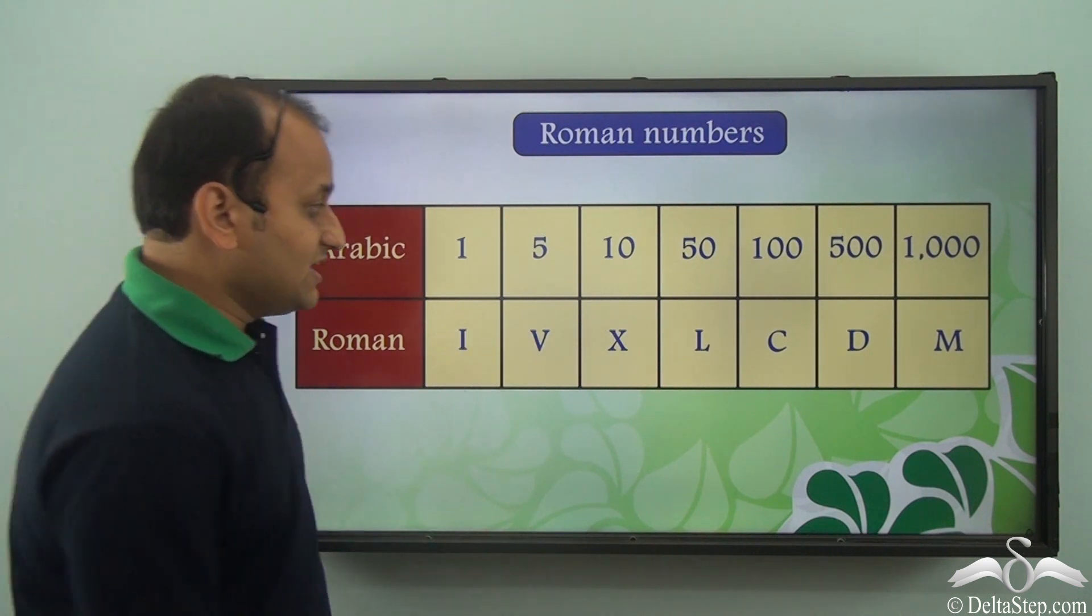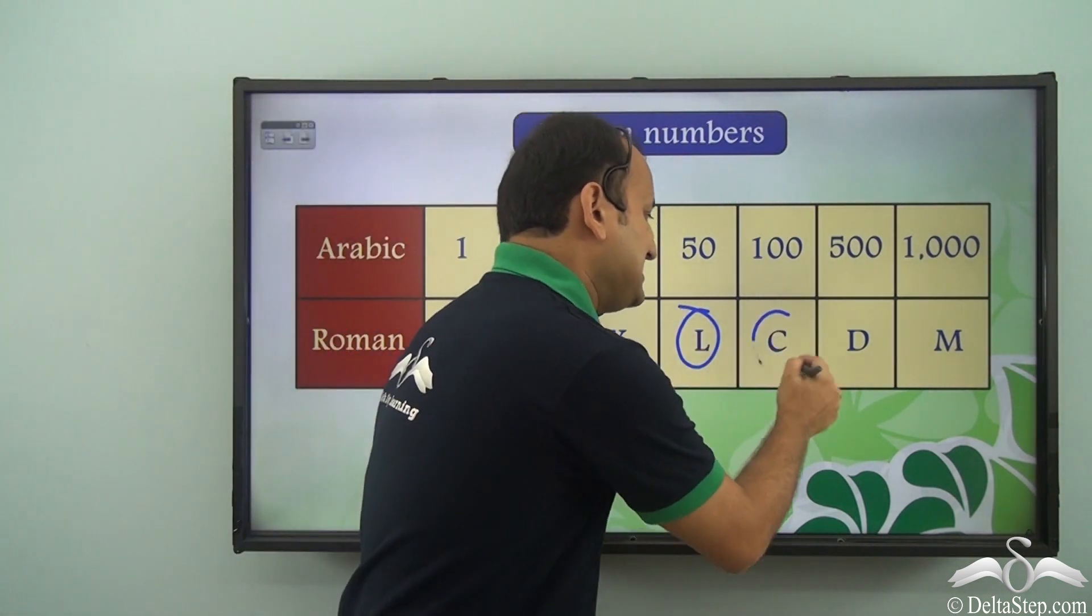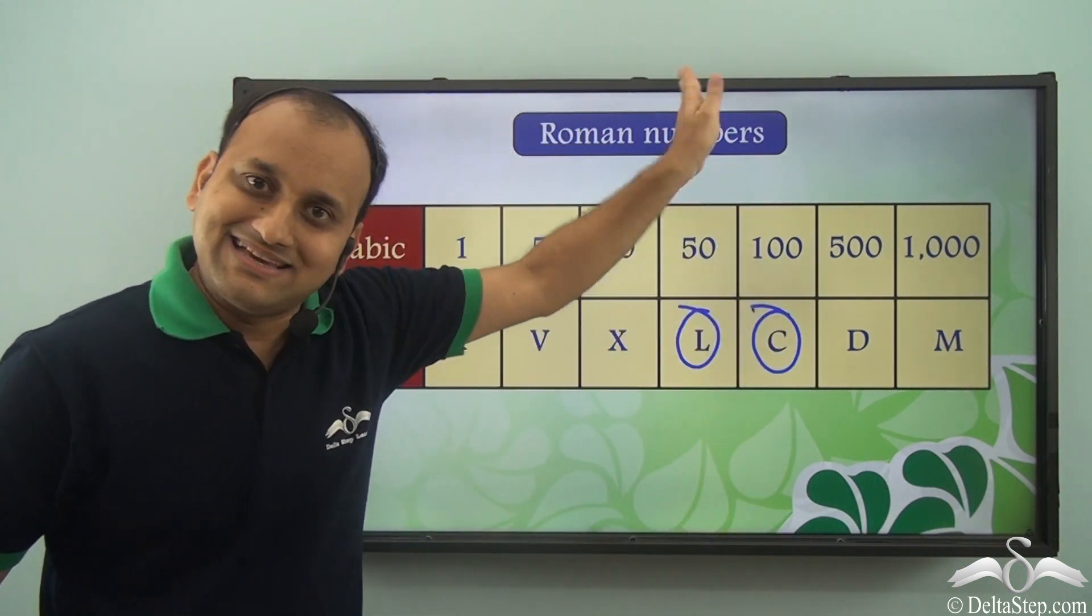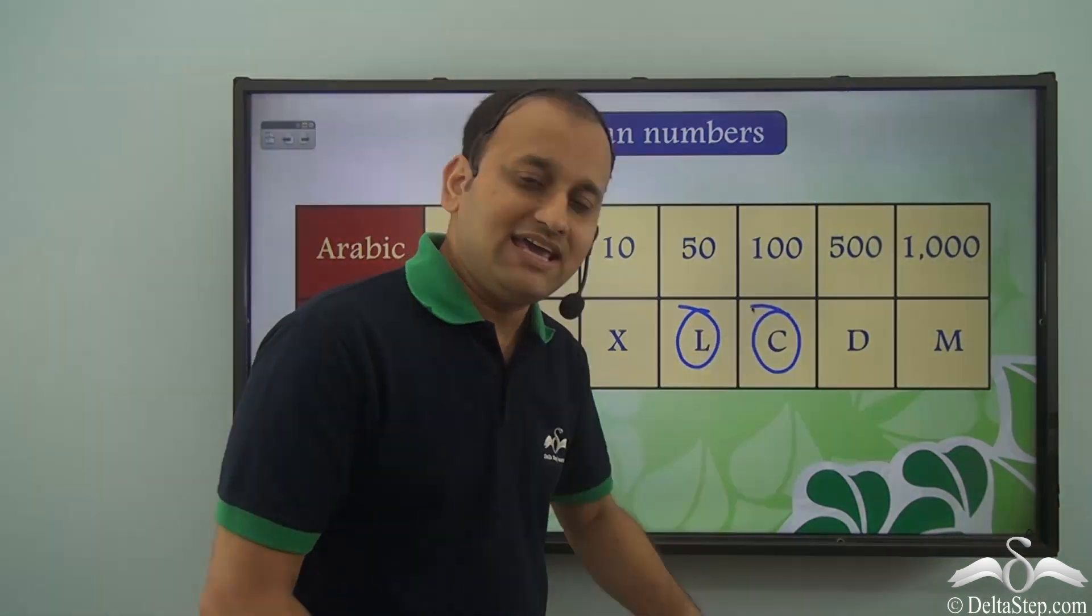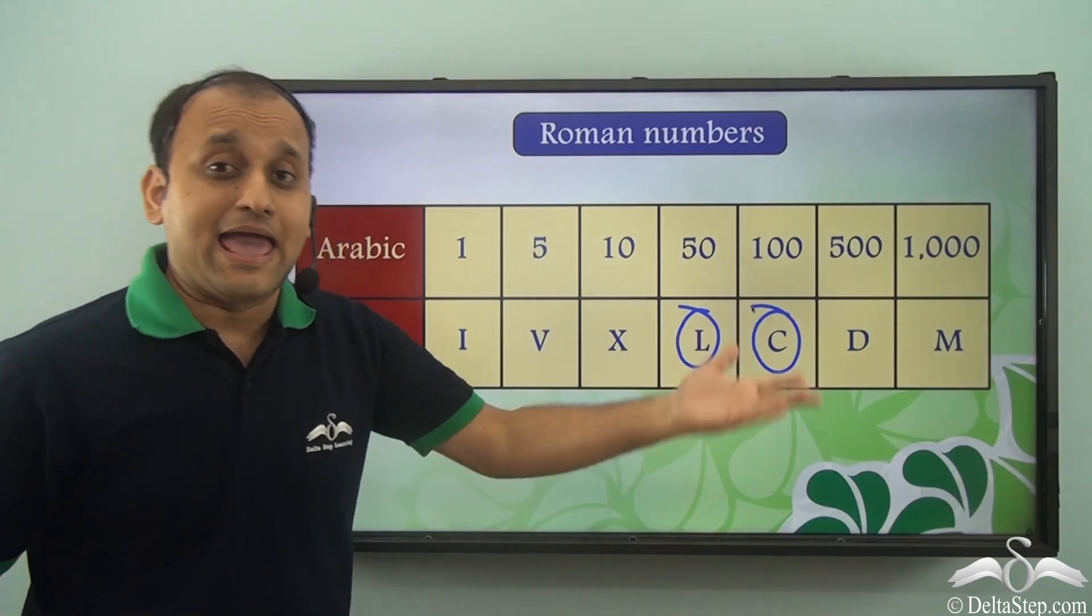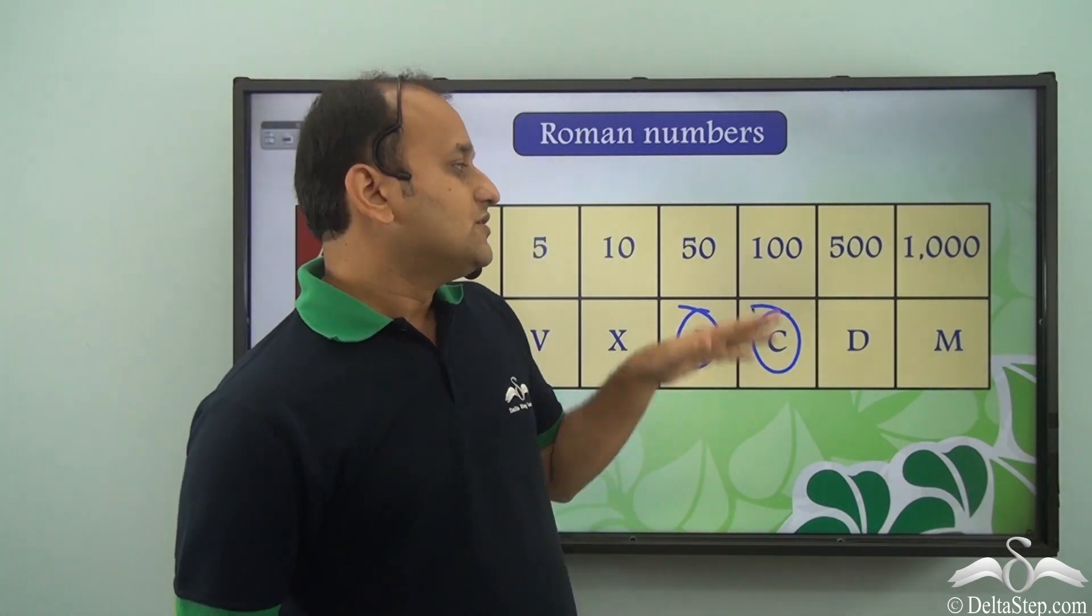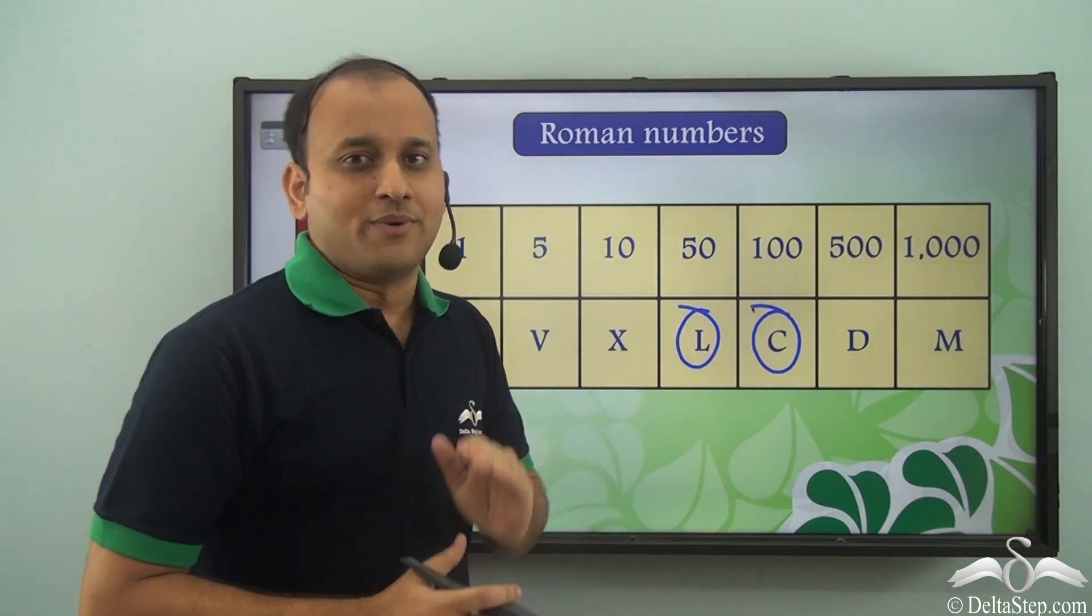So as you can see we have L which represents 50. Then we have C which represents 100. And then once this is done, you cannot use more than 3 C's, then you go for D. And when you cannot use more than 3 D's, you go for M and so on. So this is how we write different numbers using Roman numerals.